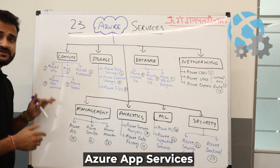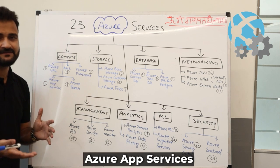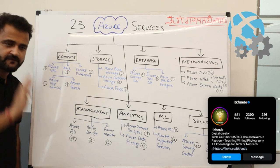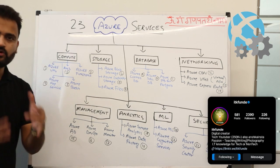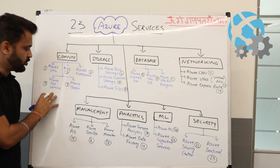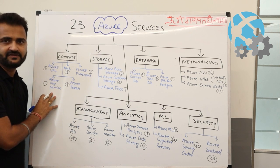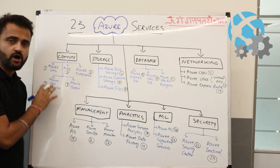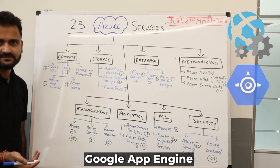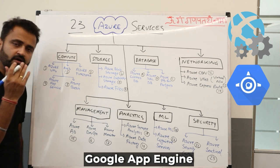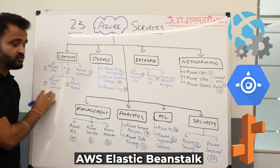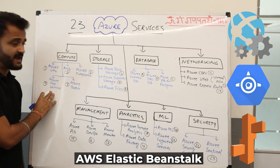Azure App Service is purely platform as a service — I've kept it under compute. If you have your code or application, you can directly deploy it on Azure App Service. The equivalent on Google is Google App Engine, and on AWS we have Elastic Beanstalk.